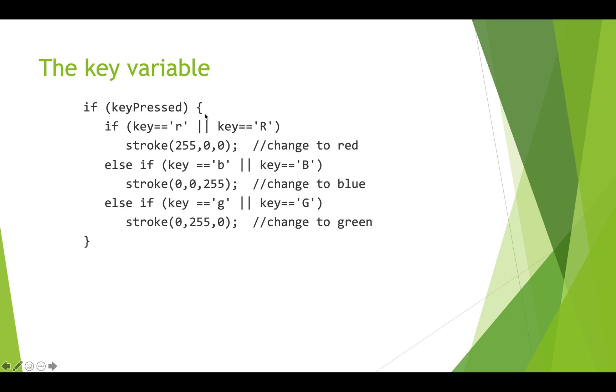Here's an example. If we have an if statement where we're checking if a key was pressed, we can then have further if-else statements that check which key. This one says if key equals lowercase r or if key equals uppercase R then we change our stroke color to red. Here if key equals lowercase b or key equals uppercase B then we're going to change our stroke color to blue. This is one way that you can use the keys from the keyboard to get input from the user and do something interesting with it.